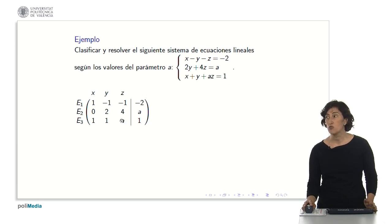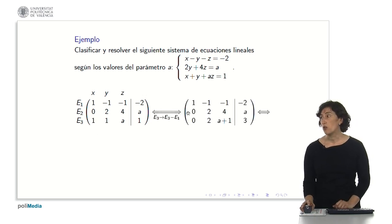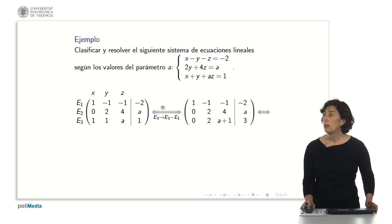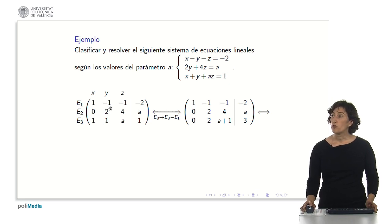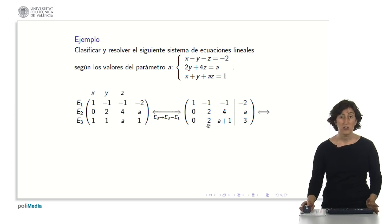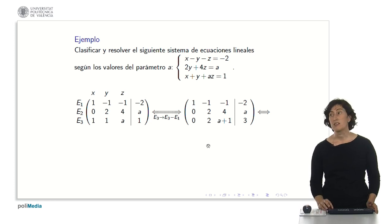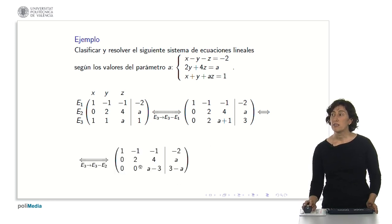If a coefficient is a, we write a; if it is not, we write 0; and the independent term involving a is written as a. We apply the method the same way and make zeros below this diagonal line — a zero here and a zero here. For the first operation, equation 3 minus equation 1 gives 0, then 1 minus minus 1 equals 2, and a plus 1 remains since we don't know the value of a. Continuing, equation 3 minus equation 2 gives that next zero, and we arrive at the resulting system.